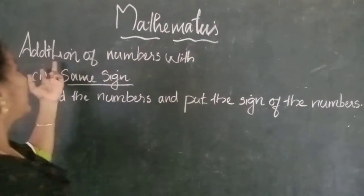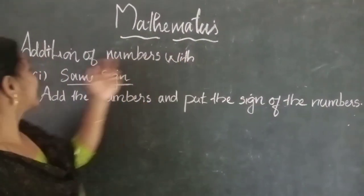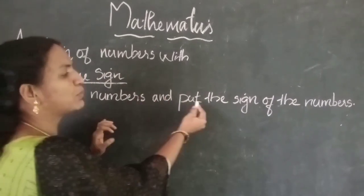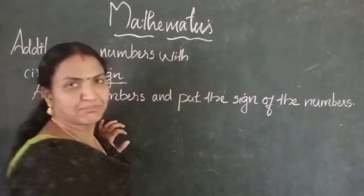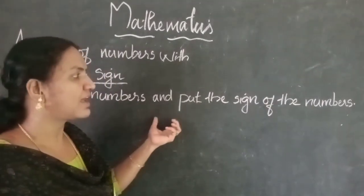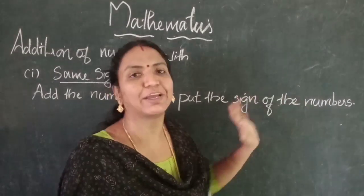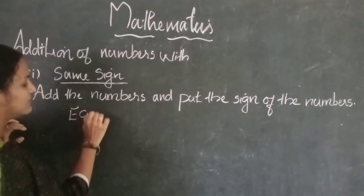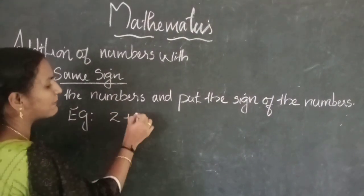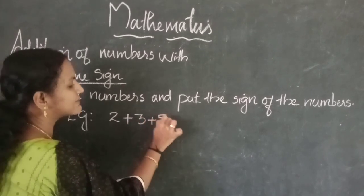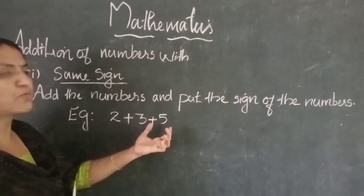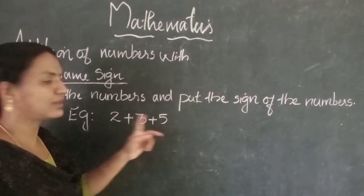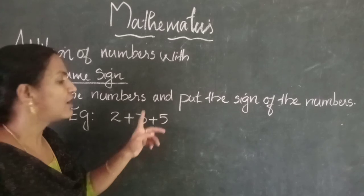Addition of numbers with the same sign: add the numbers and put the sign of the numbers. First add the numbers, then put the sign. For example, 2 plus 3 plus 5 — these are all positive numbers, so we add them: 2 plus 3 is 5.